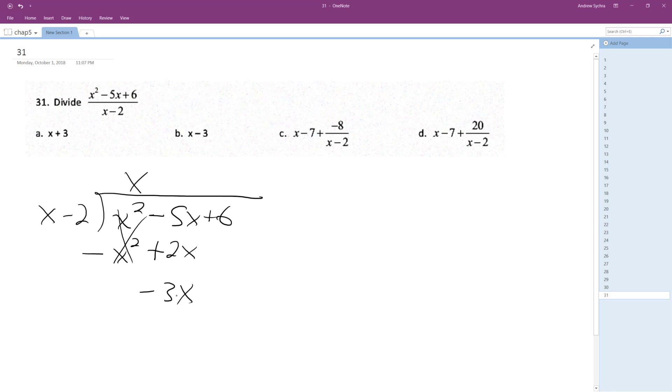So how many times does x go into negative 3x? It goes into there minus 3 times, so multiply it minus 3x, and then multiply that. We get plus 6.